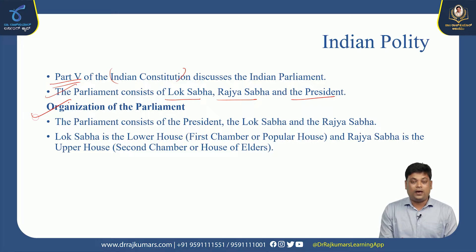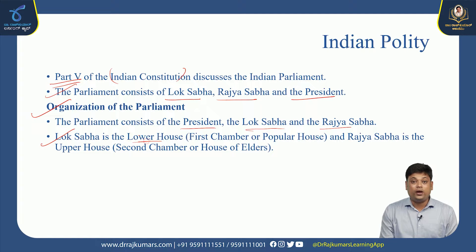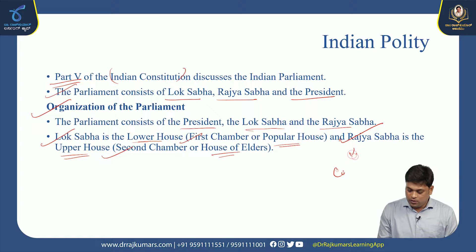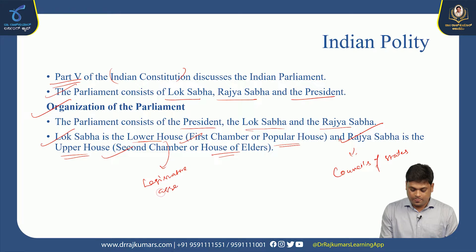The organization of the Parliament includes the President, Lok Sabha, and Rajya Sabha. Lok Sabha is known as the lower house, first chamber, or popular house. Rajya Sabha is known as the upper house, second chamber, or house of elders — also called the Council of States. Lok Sabha is referred to as the Legislative Assembly.